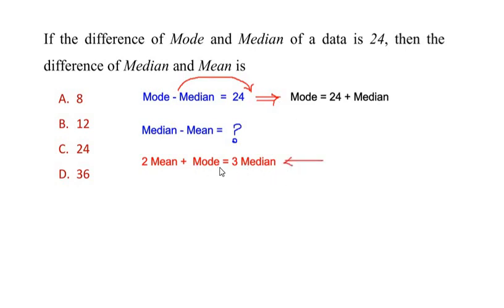Let us substitute in place of mode 24 plus median. So the formula changes as 2 mean plus the mode is replaced by 24 plus median is equal to 3 median.